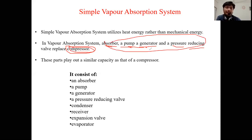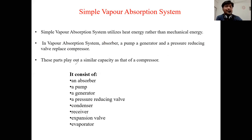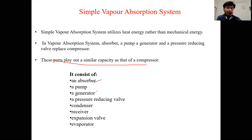The VARS system consists of: absorber, pump, generator, pressure-reducing valve, condenser, receiver, expansion valve, and evaporator. These parts collectively play out the same capacity as a compressor in the VCRS cycle.